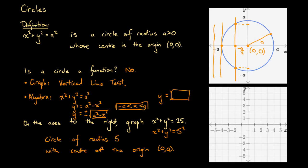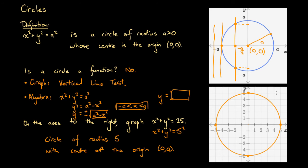Let's draw that on the graph. Our center is at the origin and we have a circle of radius 5, so all points on this circle are 5 units from the origin. The point (5, 0) is on the circle, as are the points at the top, bottom, and left — each 5 units from the origin. Using the circle tool, we draw the circle. This is a representation of x squared plus y squared equals 5 squared, or equivalently, x squared plus y squared equals 25.